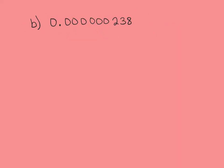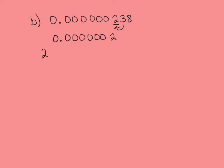For our next problem, we have 0.0000000238. We're once again wanting to write this as a single digit times the power of 10 as an estimate. I start by identifying 2 as the first non-zero digit on the left, and use the digit to its right — 3 — to decide if it rounds up or stays the same. Since 3 is under 5, it stays the same, giving us 0.000000002, which is 2 times 0.00000001.